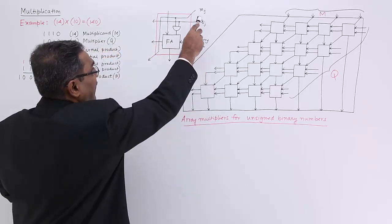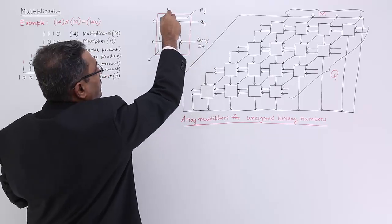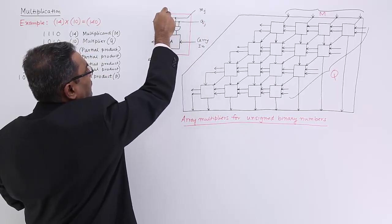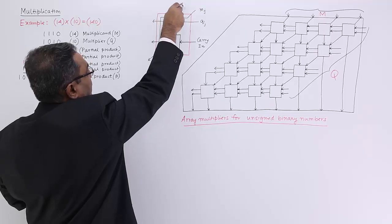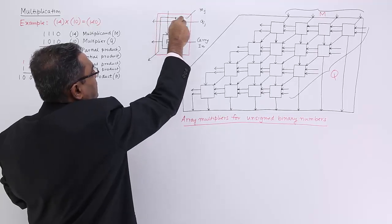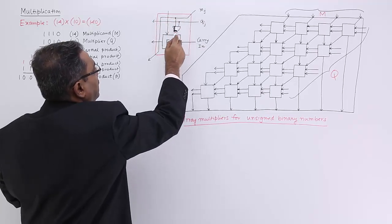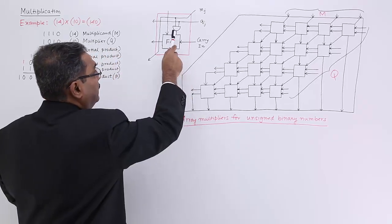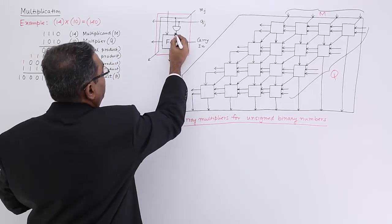So now this mj and qj will be coming as inputs. This is the sum which will be coming from the upper levels. So these things are coming. mj and qj will be multiplied using the AND gate, so it's getting multiplied. So it will be coming to this full adder.